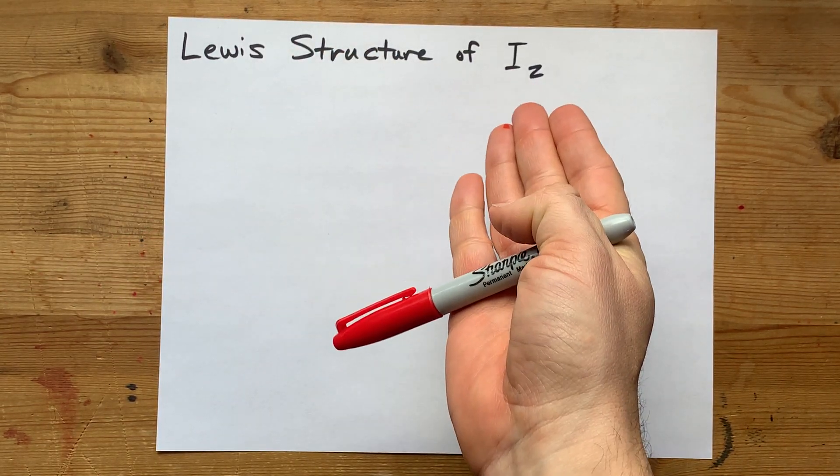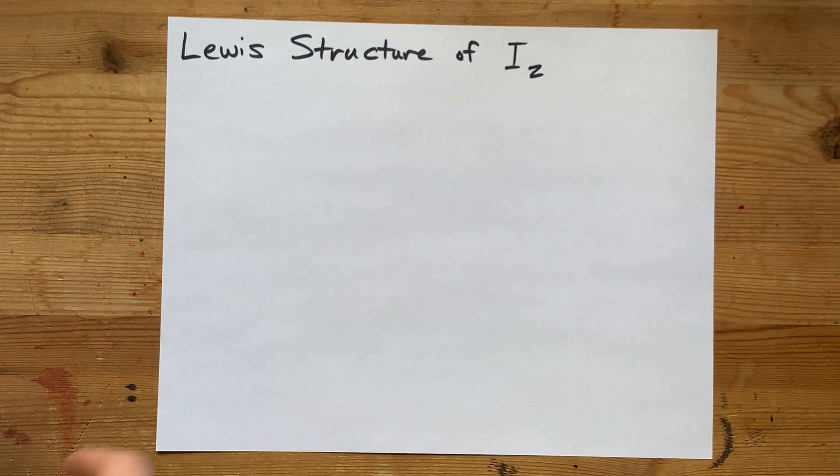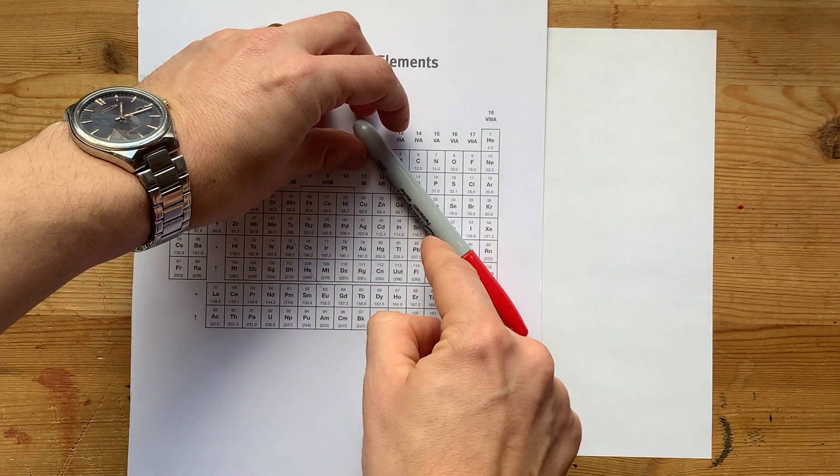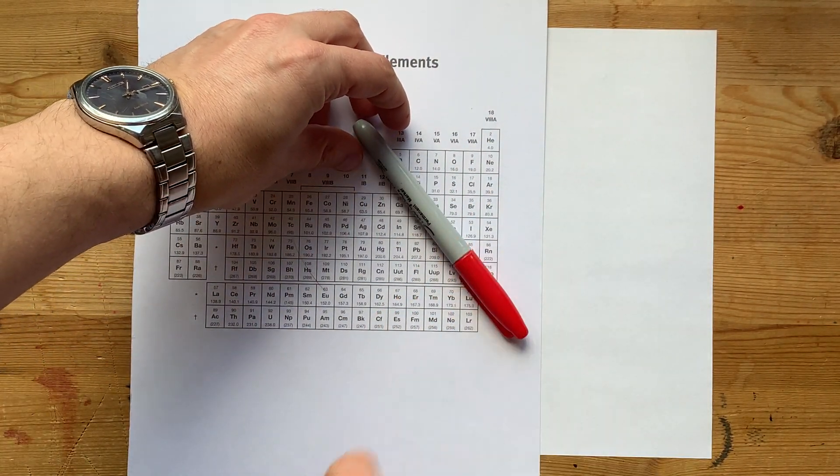The Lewis structure of iodine, or I₂. Iodine is a non-metal. I know that because it comes from the top right-hand side of the periodic table.